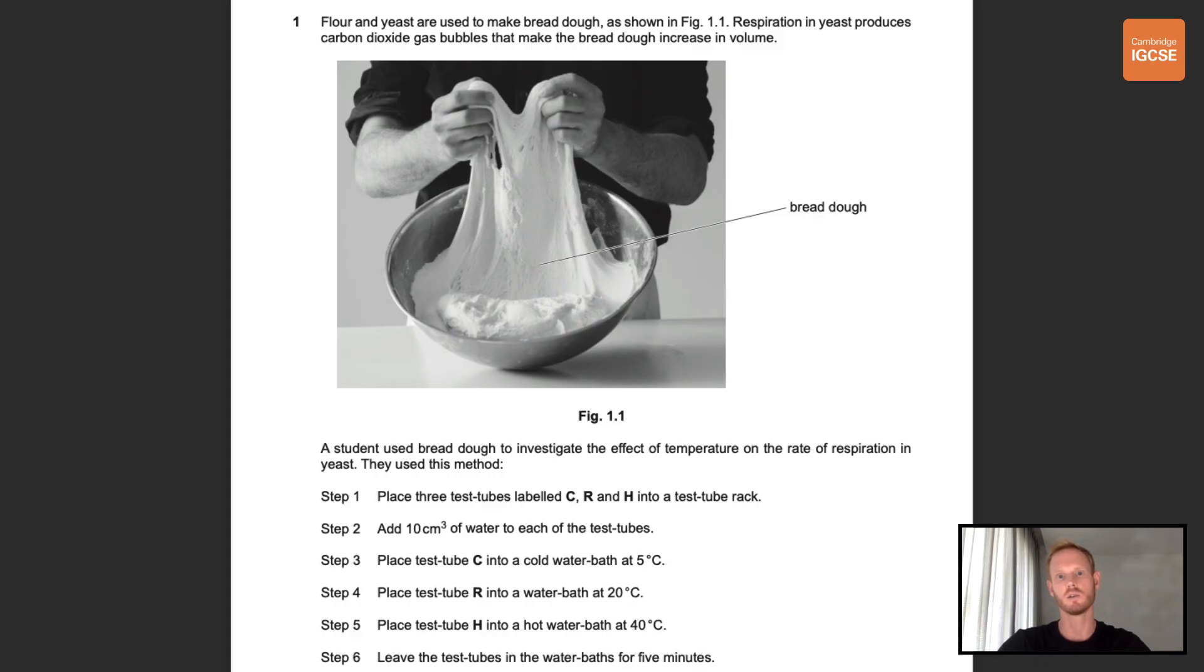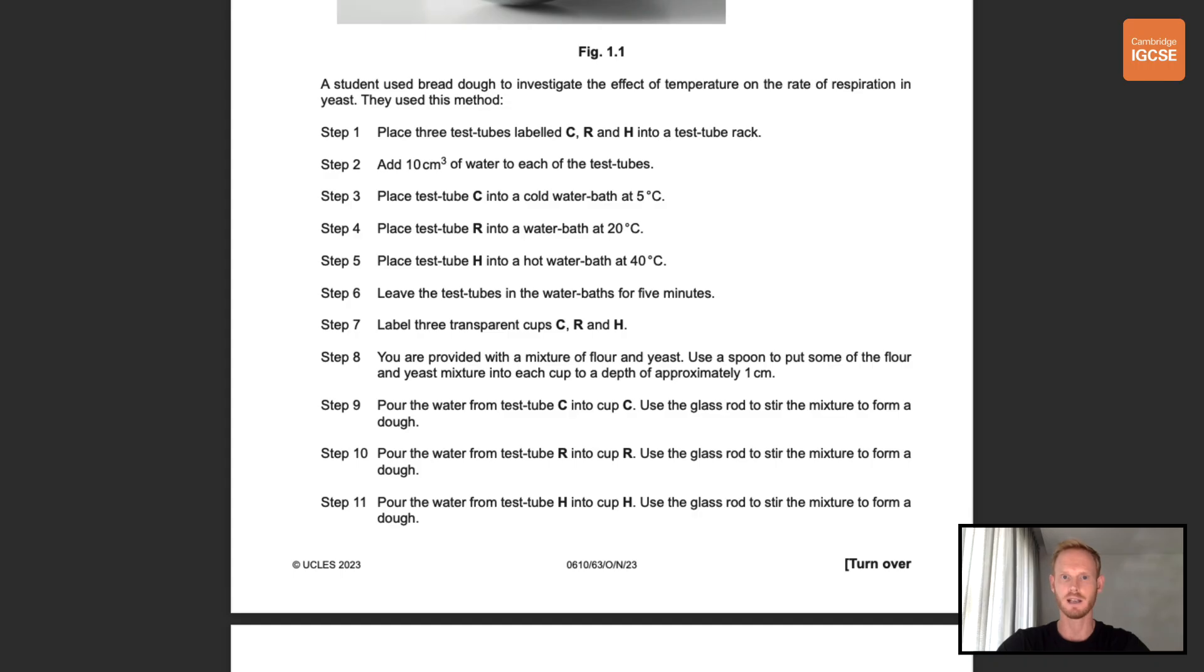So flour and yeast are used to make bread dough as shown in figure 1.1. Respiration in yeast produces carbon dioxide gas bubbles that make the bread dough increase in volume. A student used bread dough to investigate the effect of temperature on the rate of respiration in yeast. They placed three test tubes, labelled C, R and H, into a test tube rack and added 10 cubic centimeters of water to each. They then placed the different test tubes in different water baths, one at 5 degrees, one at 20 degrees and one at 40 degrees, and left them for 5 minutes.